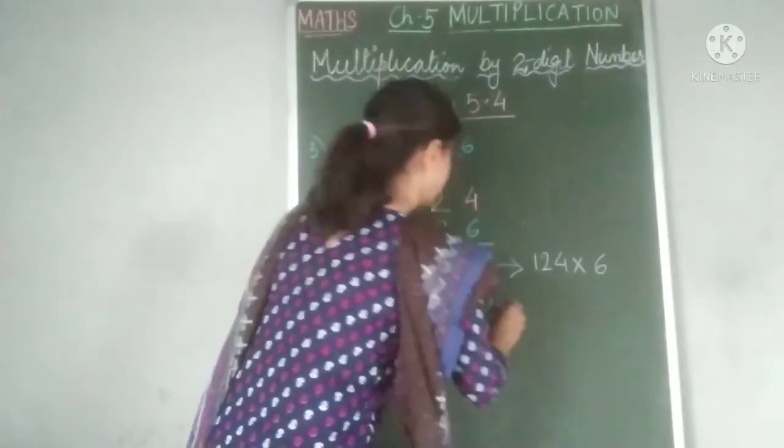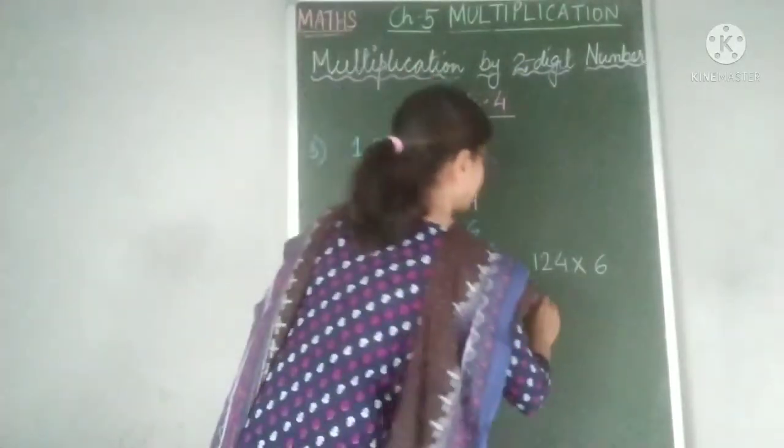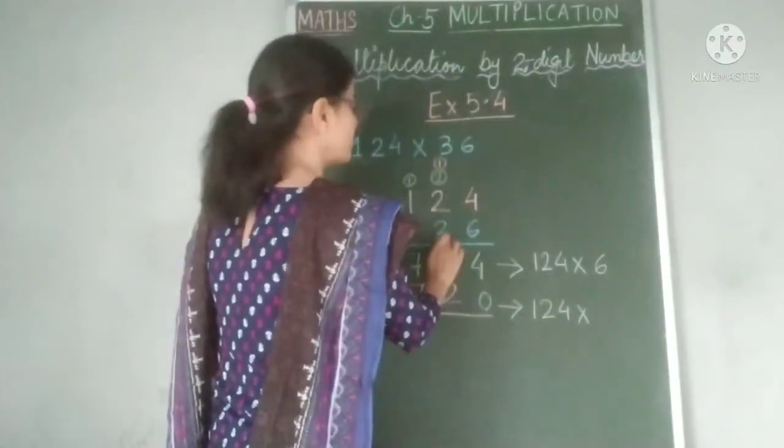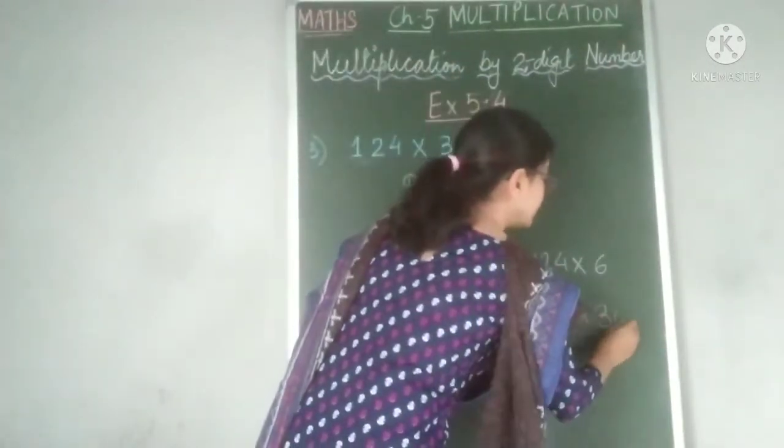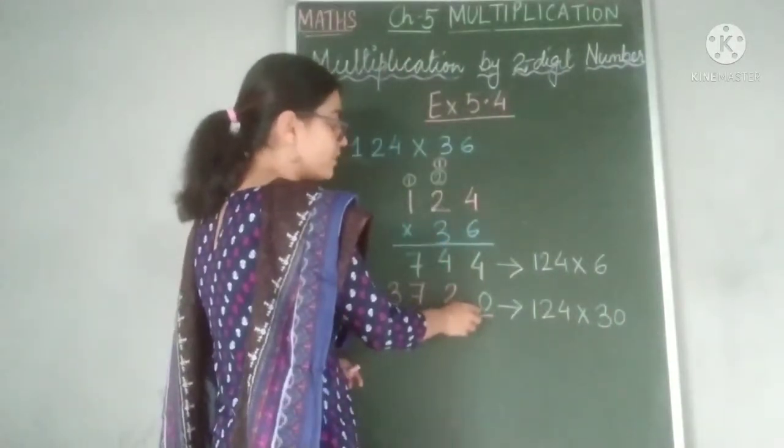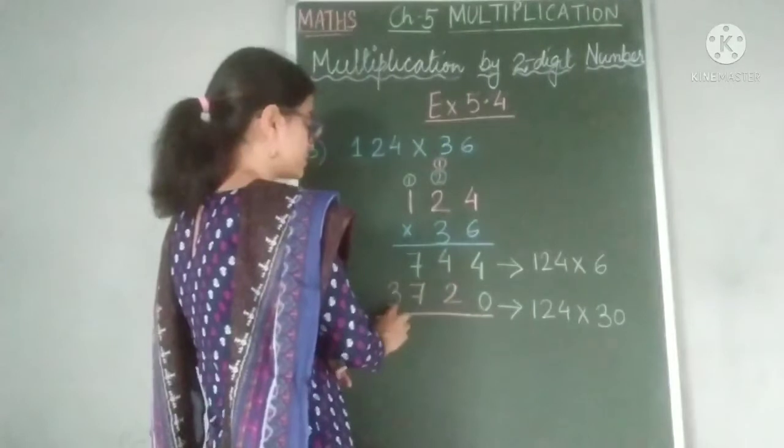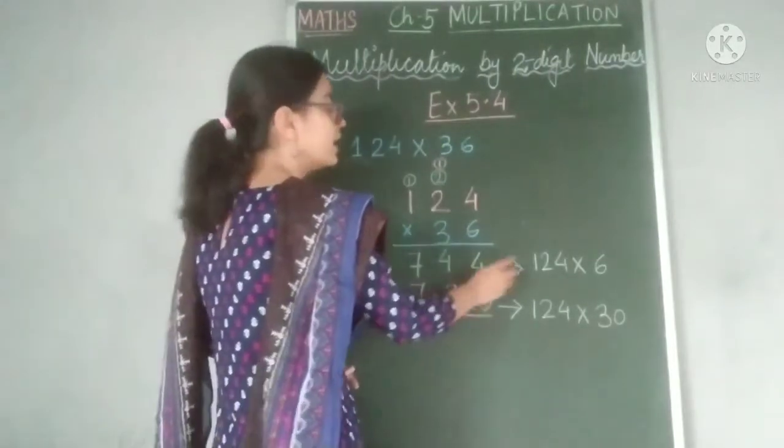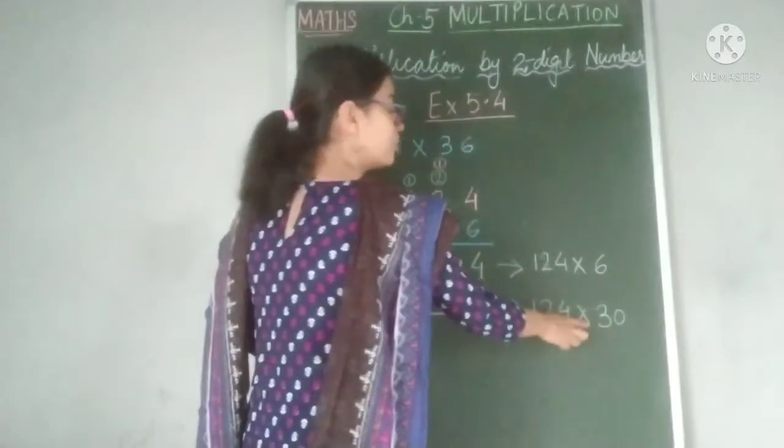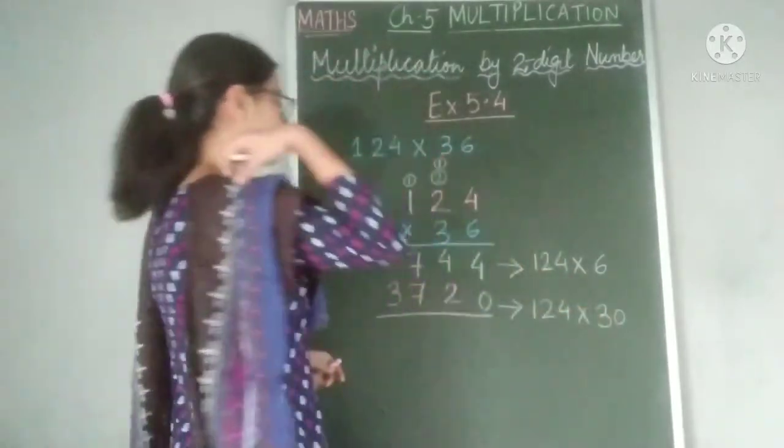Now, this is the second partial product. That is, this is the answer of 124 multiplied by 30. Children, this is at the tens place. That is why we have put a 0 here. Because 3720 is the answer of 124, that is our multiplicand multiplied by 30.